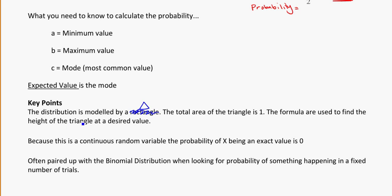So the formula is used to find your height and then the triangle at the desired value. So for instance, like we said, cut off, find the triangle for the parts that you want. And keep in mind, because this is a continuous random variable, the probability of an exact value is zero.